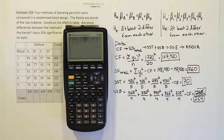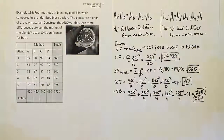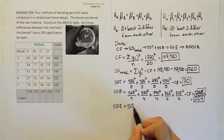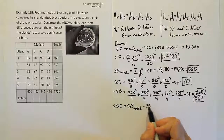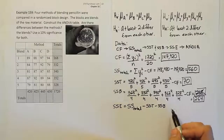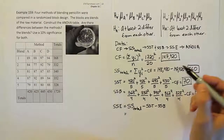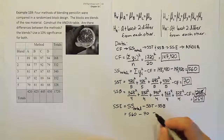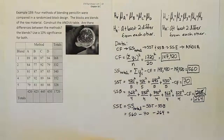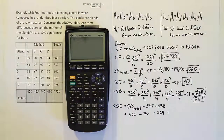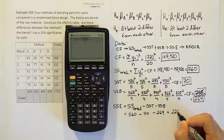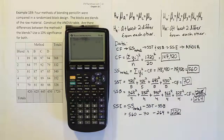The sum of squares for error is found by simple subtraction: SS Total minus SS Treatment minus SS Blocks. That gives us 560 minus 70 minus 264, which equals 226.